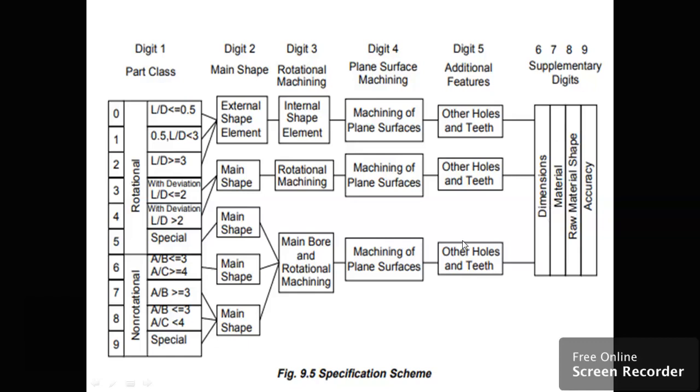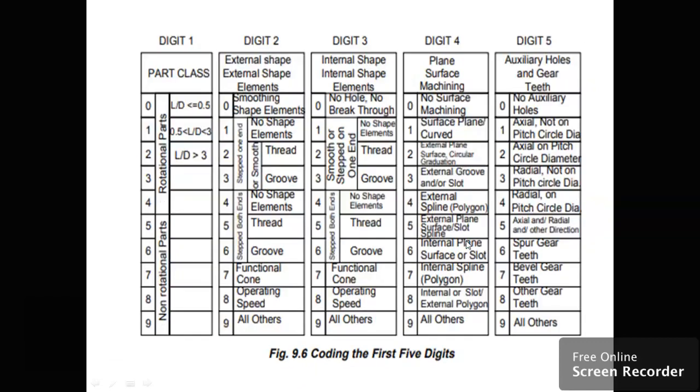The coding for the first five digits—digit 1, digit 2, digit 3, digit 4, and digit 5—have four classes already defined.